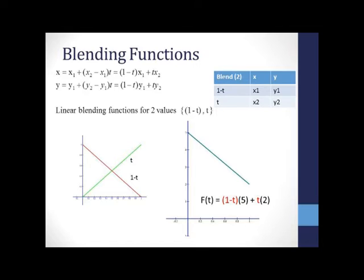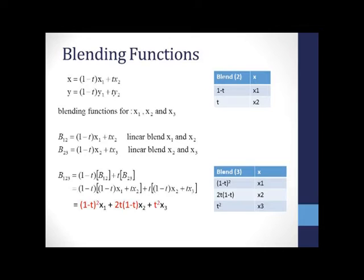We can extend this idea to three coordinates as follows. Create a linear blend between the first two points, then a linear blend between the second two, and then finally a linear blend between the two linear blends. You can see here that we get three blending functions: 1 minus t squared, 2t times 1 minus t, and t squared, for the three coordinates x1, x2, and x3.